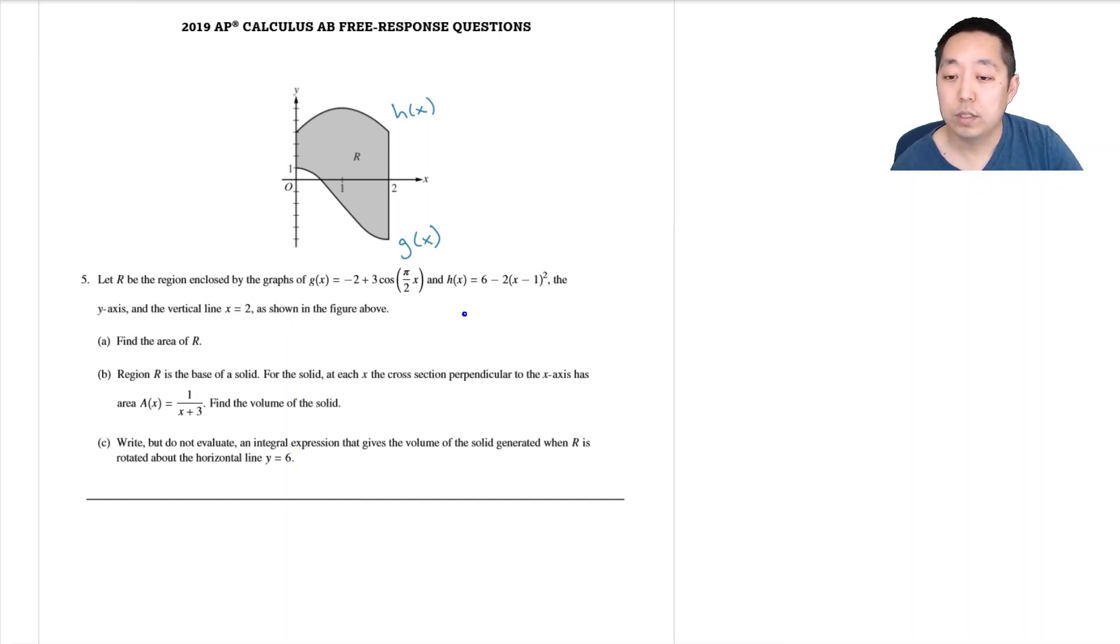That Y axis, the vertical line X equals 2 is shown in the figure above. Find the area of R. So for the area of R, what I'm going to do is integrate from 0 to 2, top minus bottom, right, H of X minus G of X, DX.